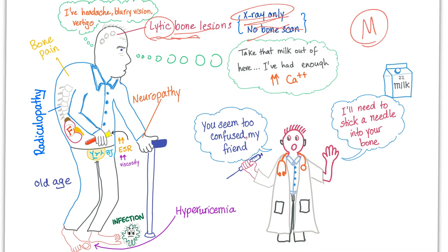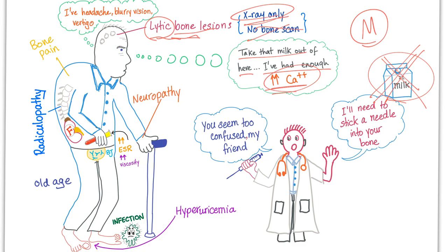He's saying, take that milk out of here — hypercalcemia, so don't give him milk. Why hypercalcemia? Because of the bone lesions. When you destroy bone, you end up with hypercalcemia because bone only has two things: matrix and minerals. And of the minerals, you have calcium.